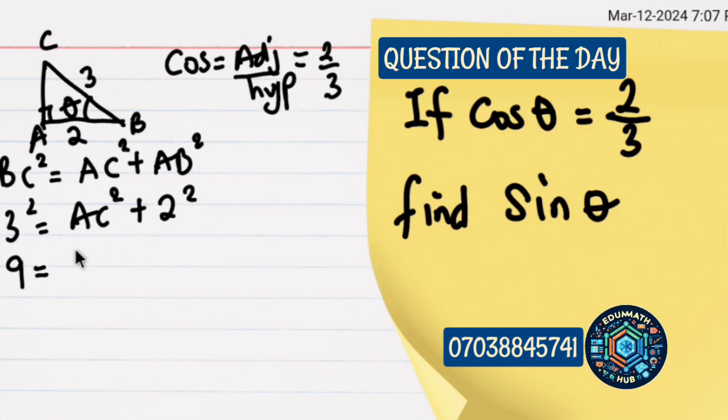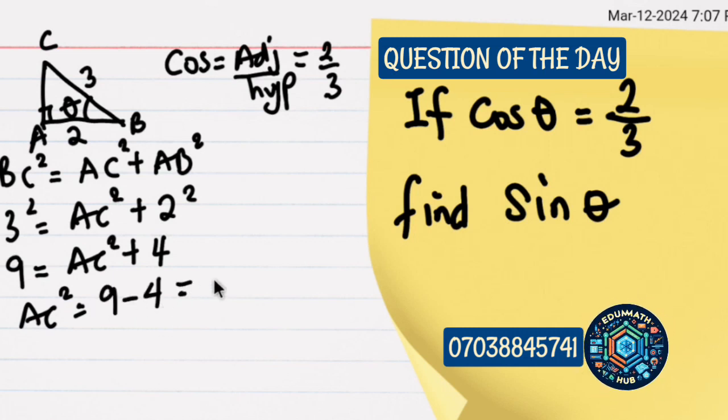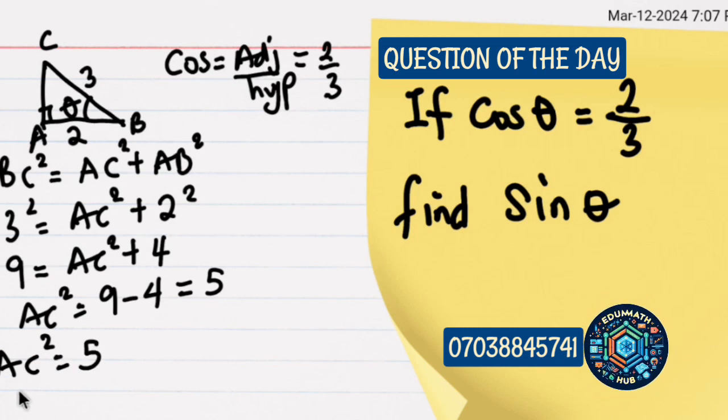Here we have 9 equals AC squared plus 2 squared is 4. From here we can find AC squared which will be 9 minus 4, that will give us 5. So AC squared equals 5.